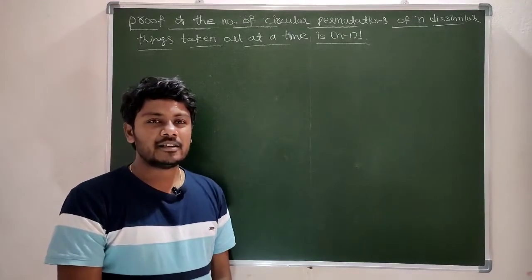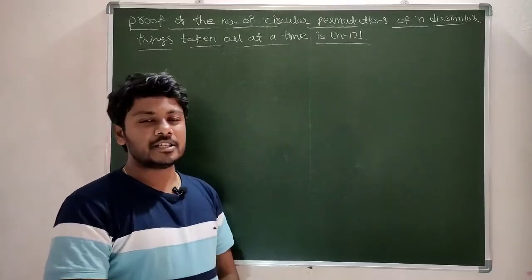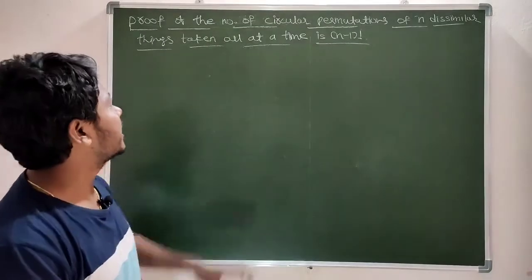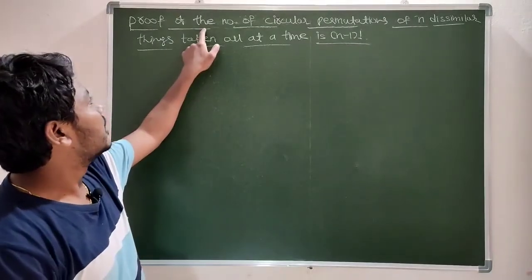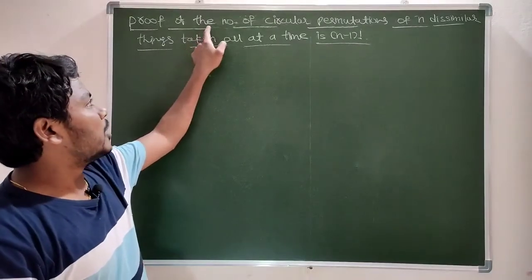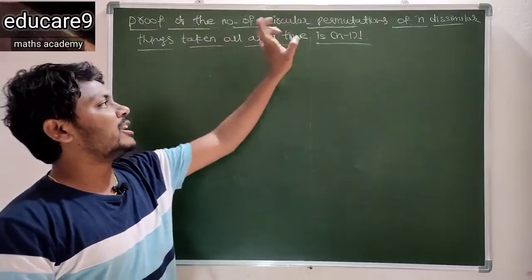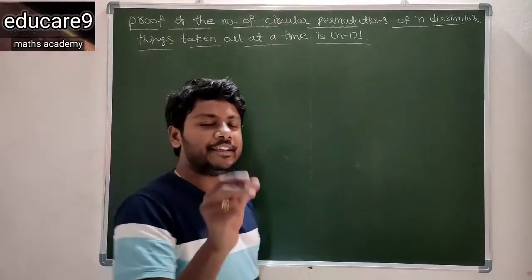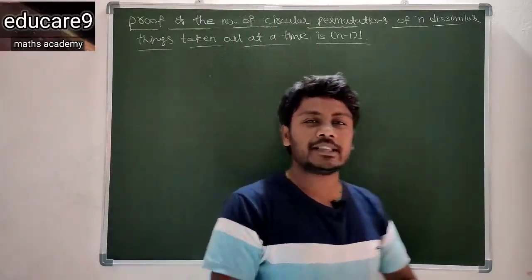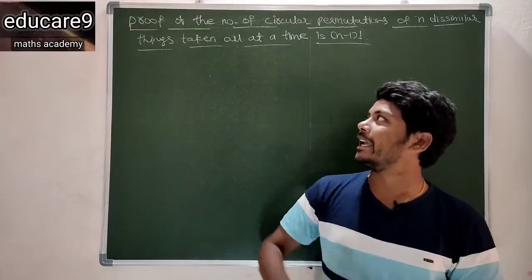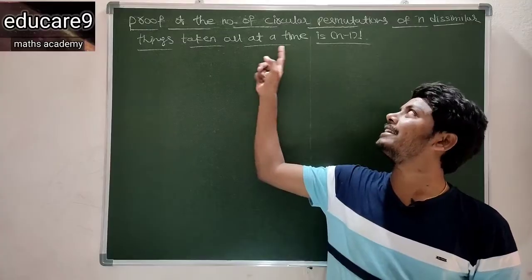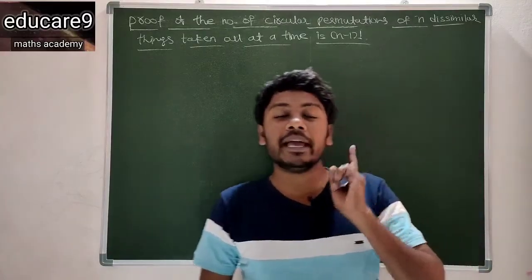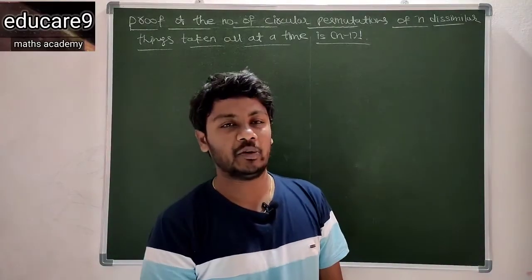Hi everyone. For this session we will discuss a new proof. The number of circular permutations of n dissimilar things taken all at a time is (n minus 1) factorial.